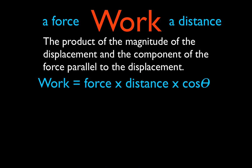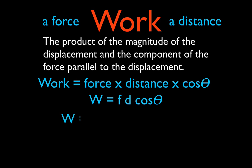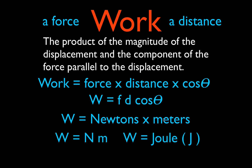In a couple of minutes I'm going to show you what I mean by that. We abbreviate the definition as Fd cosθ — F force, d distance, times the cosine of theta, theta being the angle between the displacement (the direction the object is moving) and the force being applied. The units for work: force is newtons, distance is meters, giving us the newton-meter, which we abbreviate as the joule, J-O-U-L-E, capital J. Named after James Prescott Joule. Work and energy are both measured in joules.